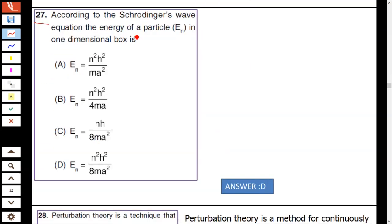Question number 27: According to Schrödinger wave equation, the energy of the particle in a one-dimensional box is given as E = n²h²/(8ma²). So D is the correct option.